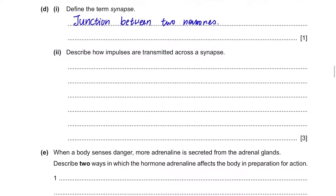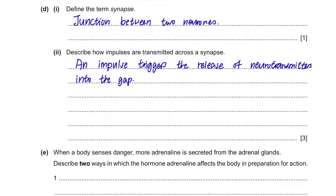Next, describe how impulses are transmitted across a synapse. An impulse will trigger the release of chemicals called neurotransmitters into the gap. These diffuse across the gap and bind to receptors on the opposite side of the junction, allowing the impulse to travel.